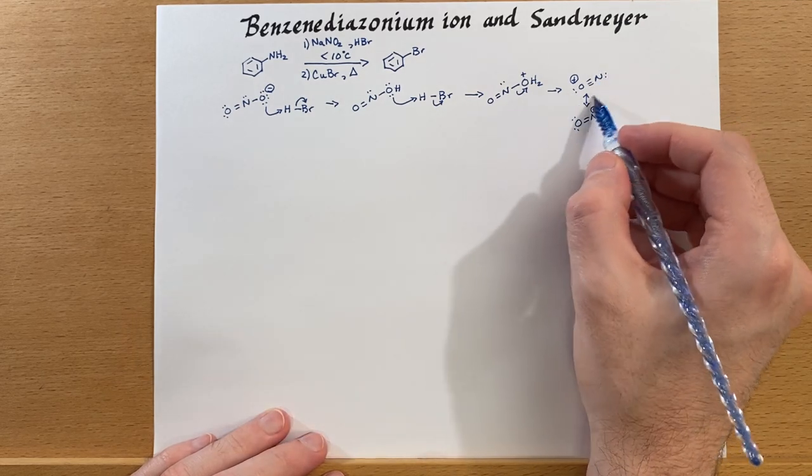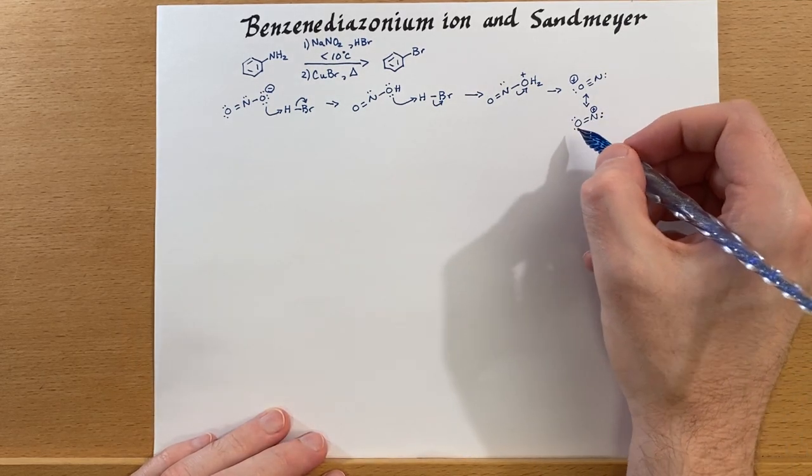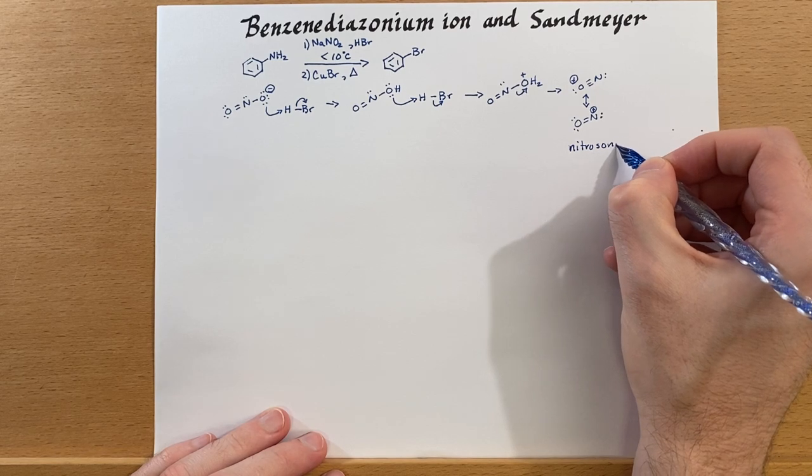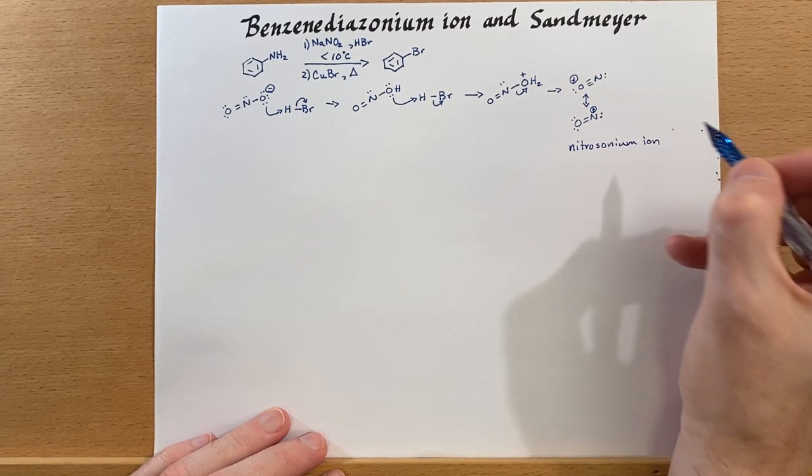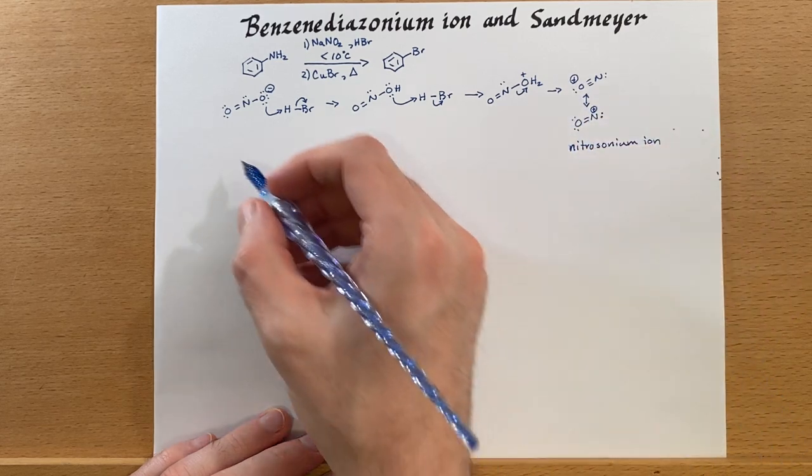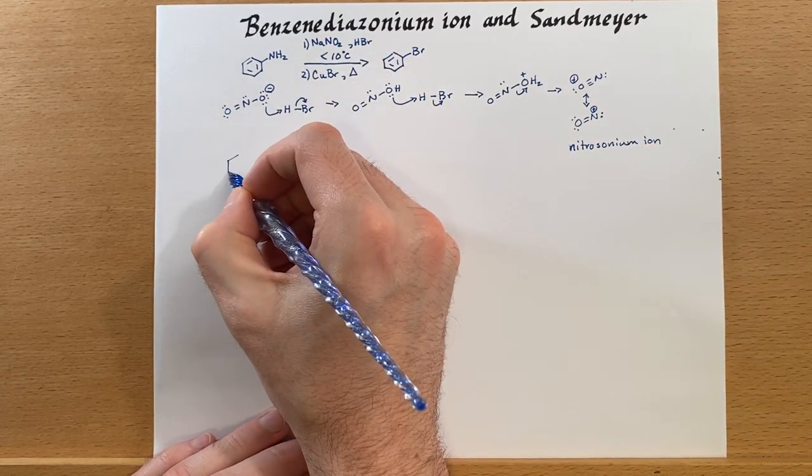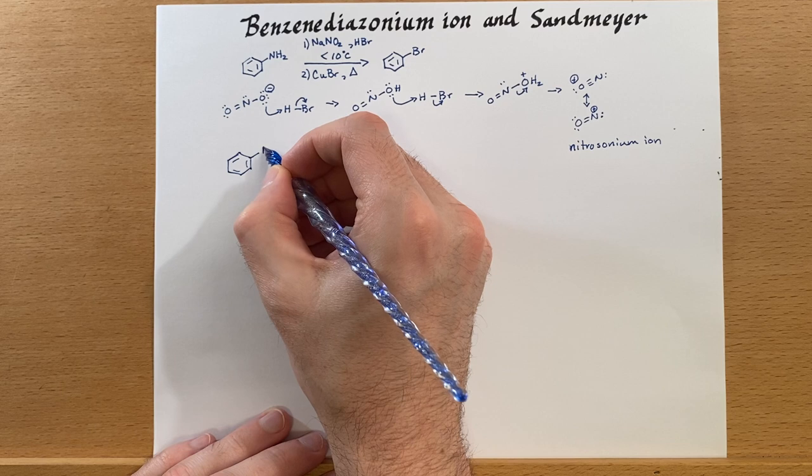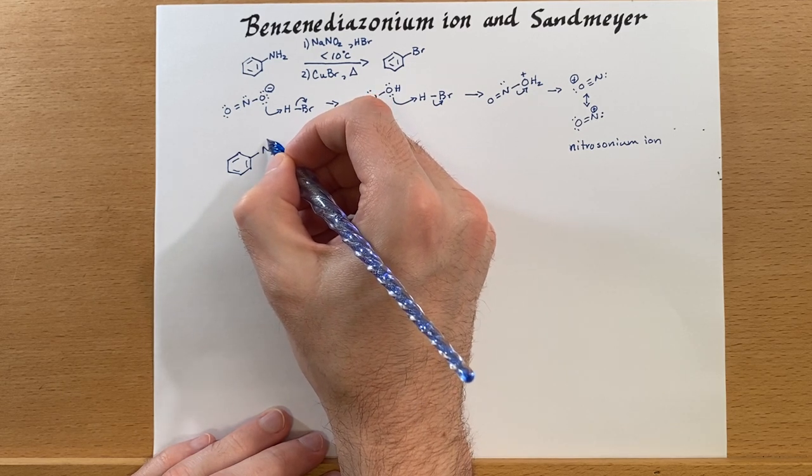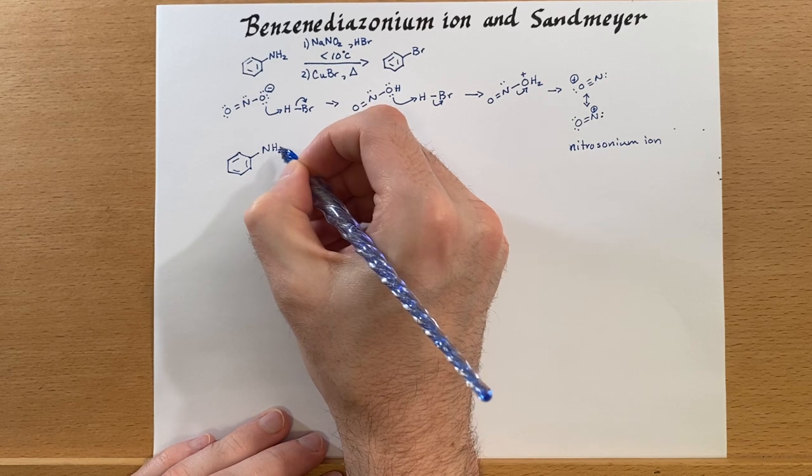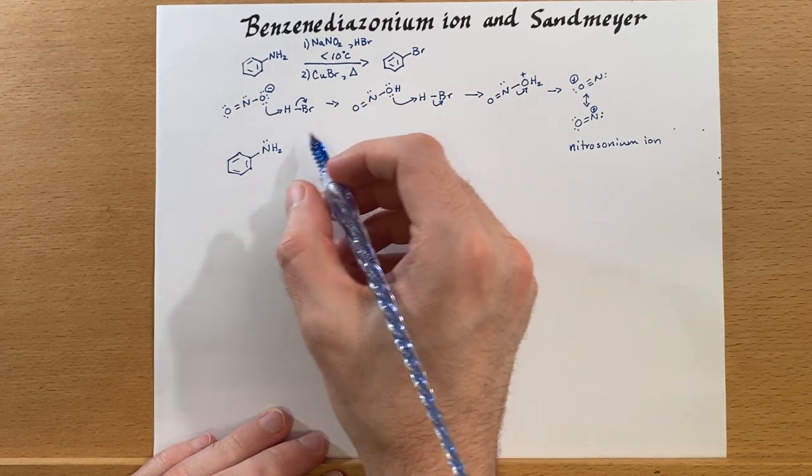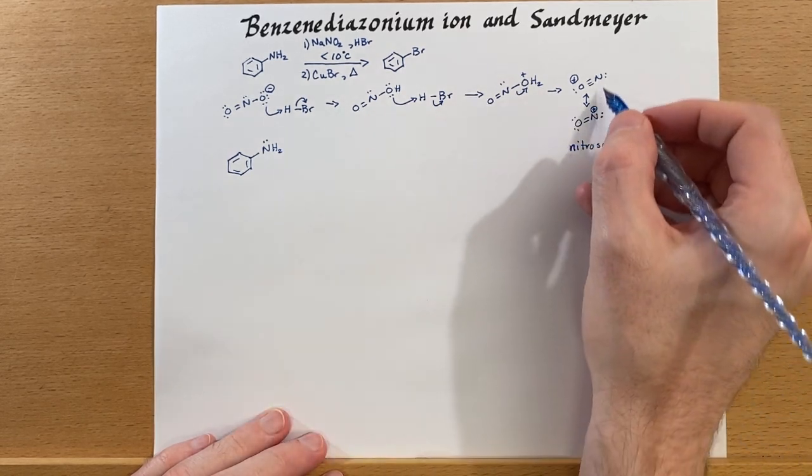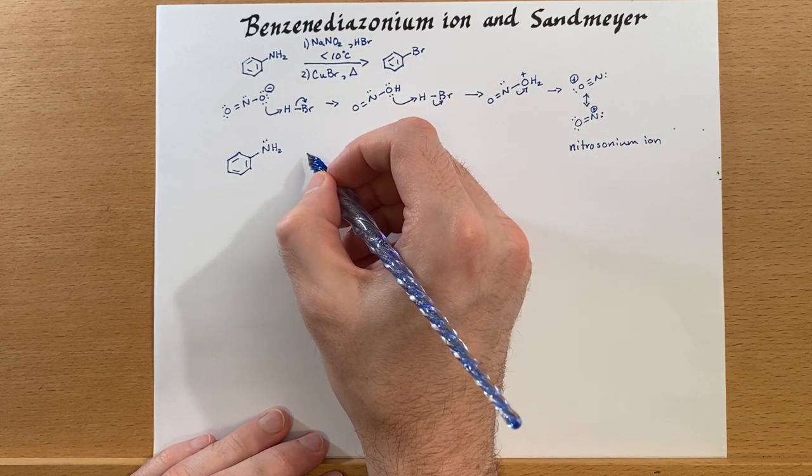Now that we've prepared the nitrosonium ion, then we can use this in our reaction. So we've got a lone pair on that nitrogen, and it's going to attack this nitrogen right here. And really, we could use either of these resonance structures for this.